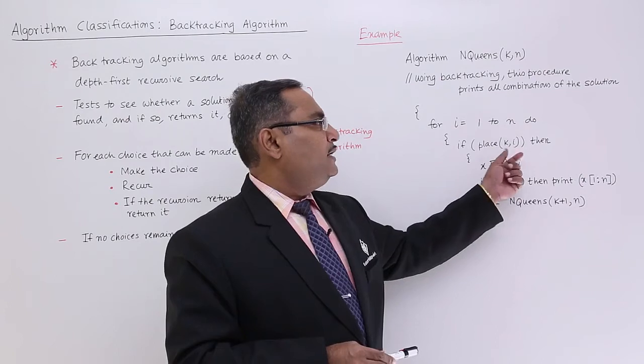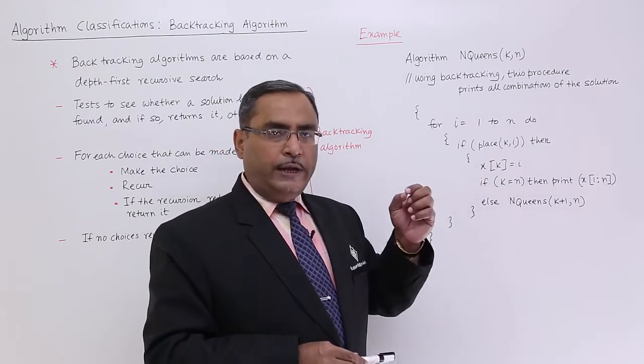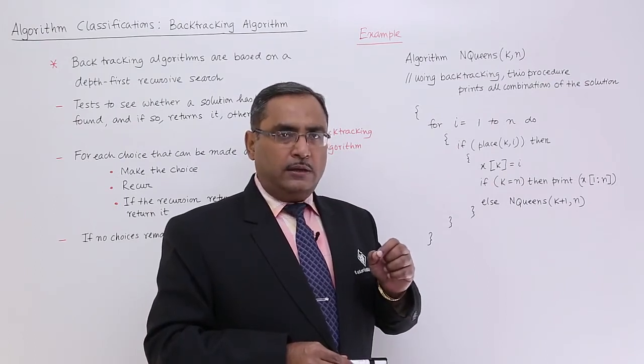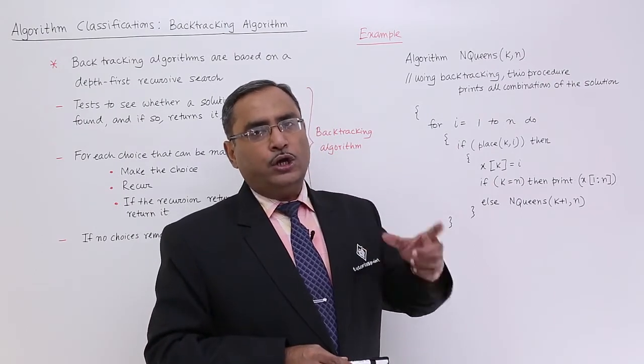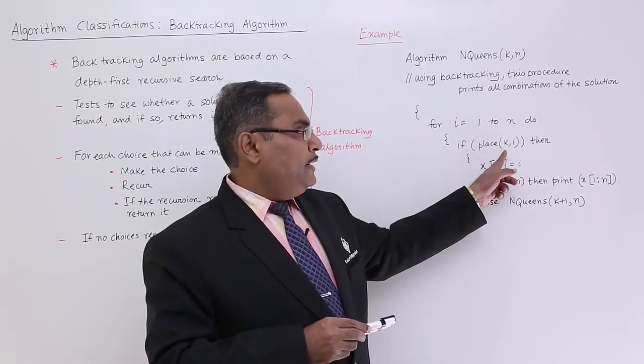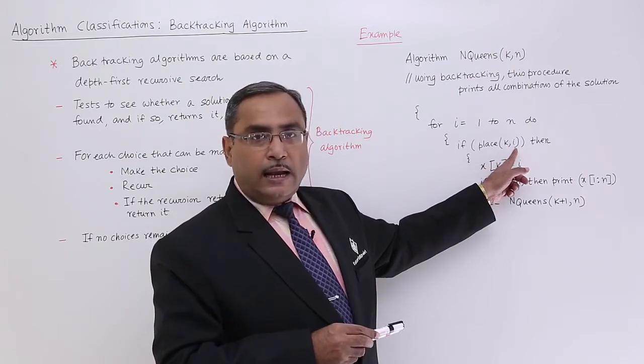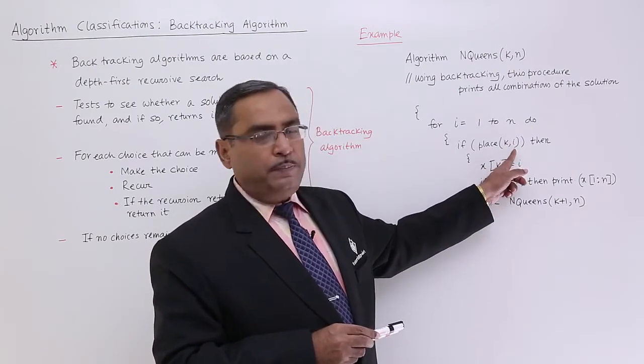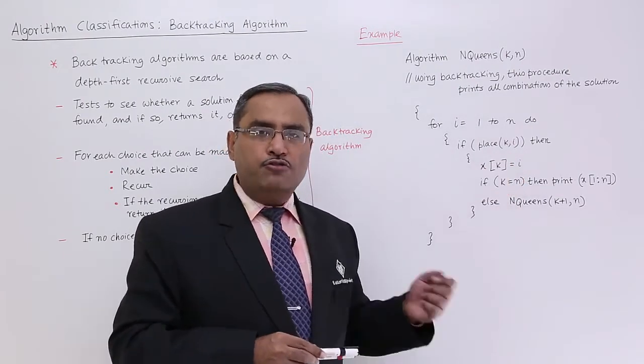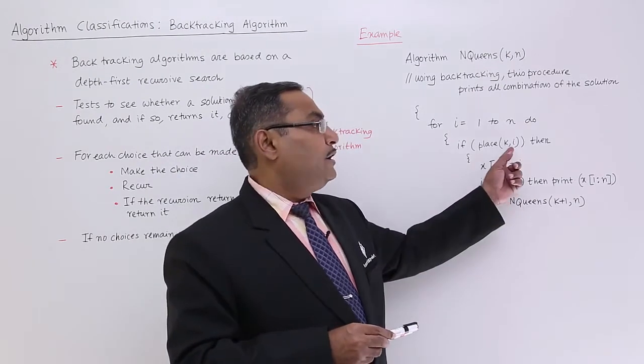If Place k i, Place is one another function which will be written separately. It will check whether this particular Queen placement is having any collision with the other Queens or not. It will return either true or false. If the Queen can be placed, the kth Queen can be placed at the ith column or not. If the kth Queen can be placed at the ith column, it will return true, and if the kth Queen cannot be placed at the ith column, then it will return false.